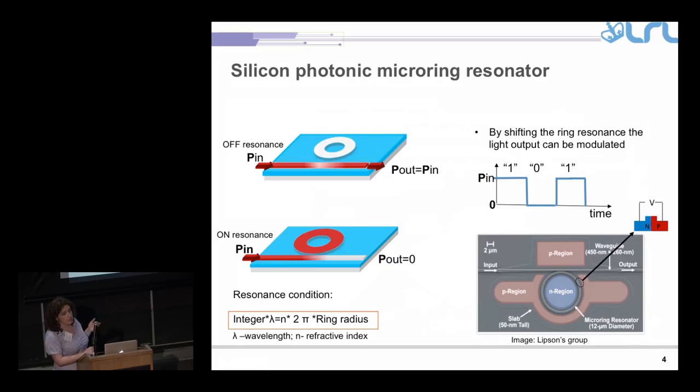The refractive index is a property of material which we can change by, for example, inserting more electrons into it. So if we observe what's happening on the output, we can see that when the ring is off resonance, the power will be on the output. And when the ring is on resonance, we'll see zero, which represents modulating data on the light signal.